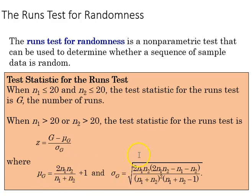The standard deviation is going to be the square root of in the numerator 2 times the product of the sample sizes times 2 times the product of the sample sizes minus sample 1 minus sample 2. All of that is divided by the product of n1 plus n2 squared times n1 plus n2 minus 1.